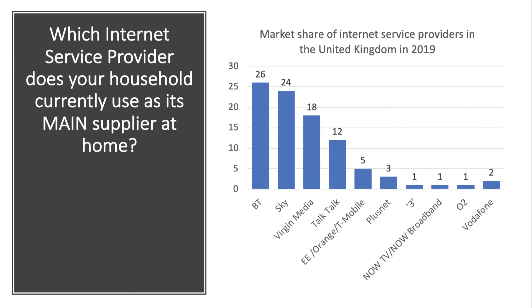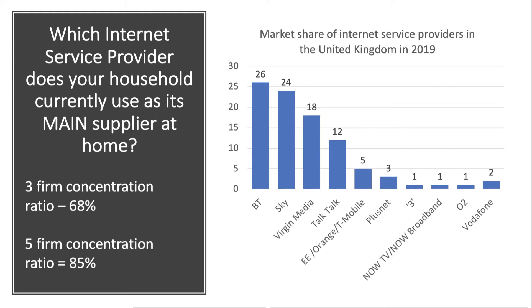Looking at the concentration ratio: if we take the top three firms — BT, Sky, and Virgin Media — together they accumulate 68 percent of the market. If we then broaden out to include TalkTalk and Orange/T-Mobile/EE, we add another 17 percent, giving a five-firm concentration ratio of 85 percent. Again, clearly an oligopoly market dominated by those five big firms.